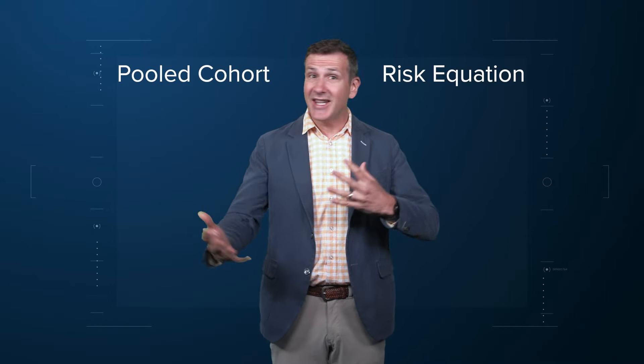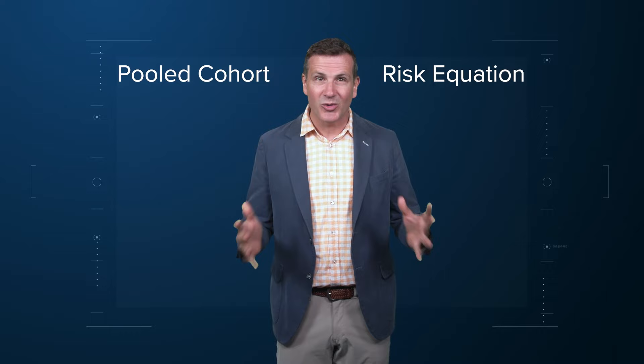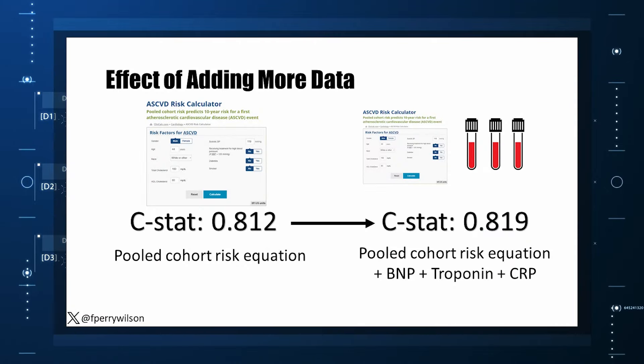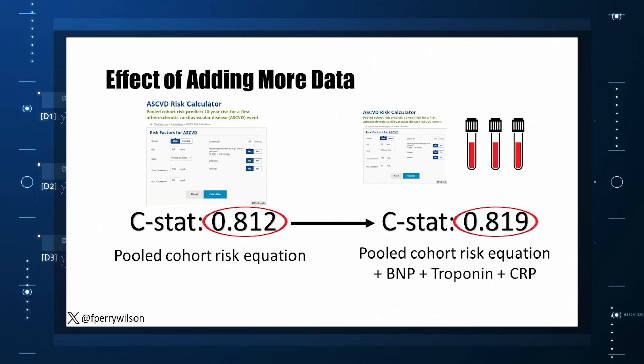The pooled cohort risk equation is still here in the background, requiring just that one blood test and measurement of blood pressure. The pooled cohort risk equation score in this study had a C-statistic of 0.812. By adding troponin, BNP, and CRP to the equation, the new C-statistic is 0.819 — barely any change. The greatest improvement in the AUC was seen when predicting heart failure within one year of measurement, where the AUC improved by 0.04. But the presence of BNP as a biomarker and the short time window of one year makes me wonder if this is really prediction at all, or whether they were essentially just diagnosing people with existing heart failure.